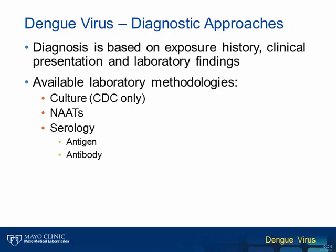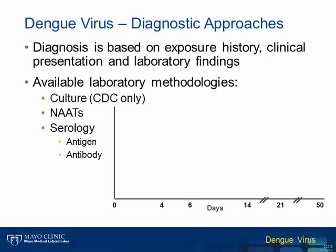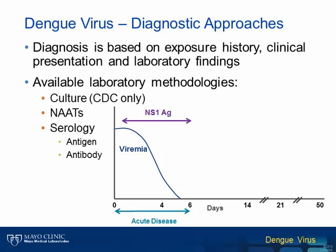Diagnosis of dengue virus infections is multifactorial and dependent on the presence of appropriate clinical symptoms and a proper exposure history. There are also a number of laboratory methodologies available to confirm the diagnosis. These methods include culture, though this is available only through the CDC and has limited clinical utility in the acute care setting. More commonly used testing methods include nucleic acid amplification tests, or NATs, which are limited to select reference laboratories, and serology for detection of both antigen from and antibodies to dengue virus. The decision of which test to choose is largely dependent on the duration of patient illness and understanding of the immune response to infection. Viremia rapidly spikes and is detectable by molecular methods for the first four to six days following symptom onset, and the dengue virus NS1 antigen is detectable during the viremic period and up to ten days following symptom onset.